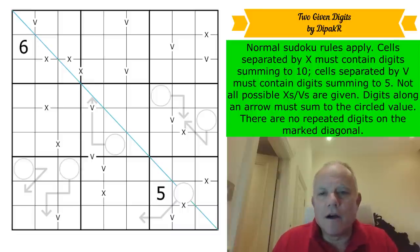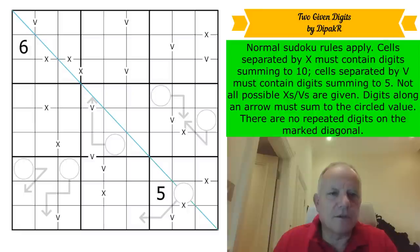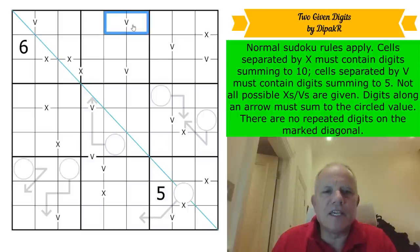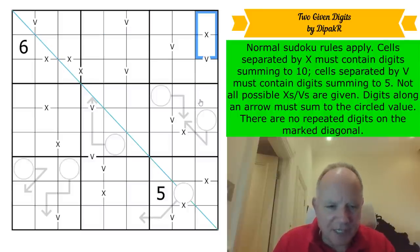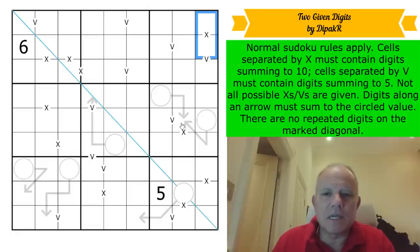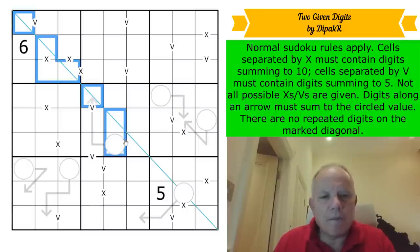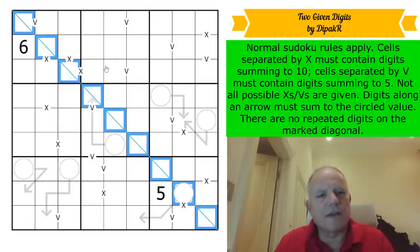The rules are: XV's, arrows, and a one-mark diagonal. One to nine in every row, column and box — normal Sudoku rules. Any two cells joined by a V add up to five; any two cells joined by an X add up to ten, but not all X's and V's are necessarily given. Digits along an arrow must sum to the circled value. And there are no repeat digits on the marked diagonal — that's a set of the digits from one to nine.